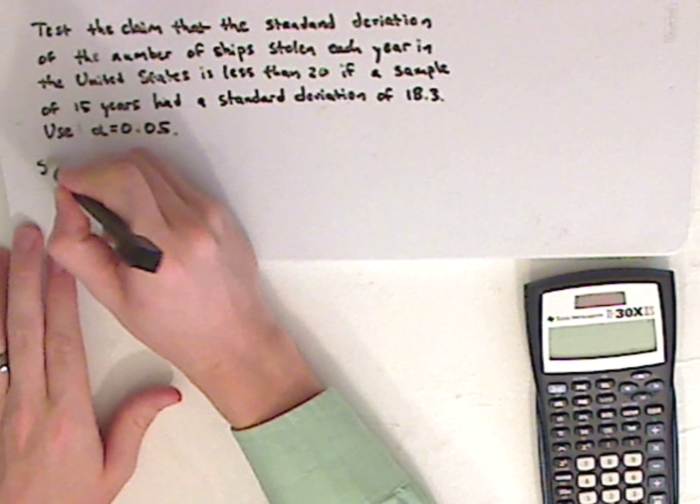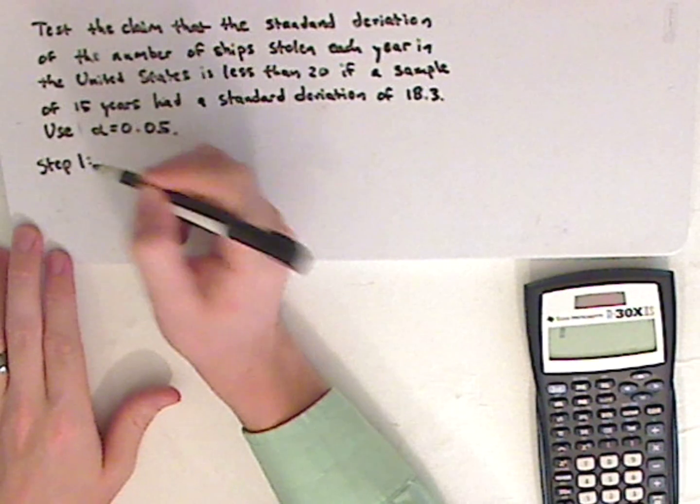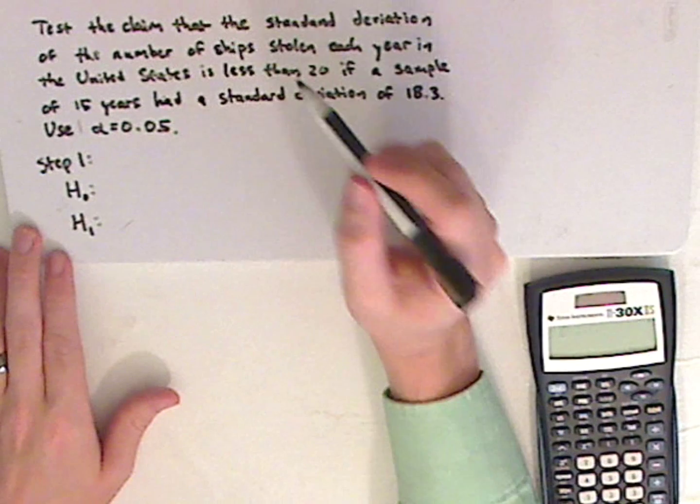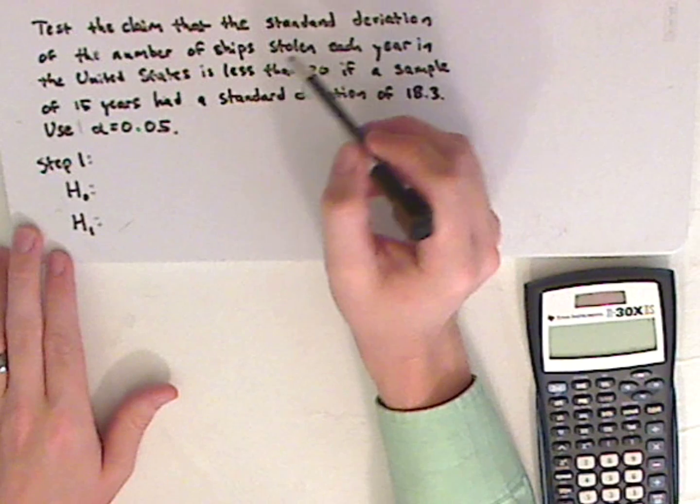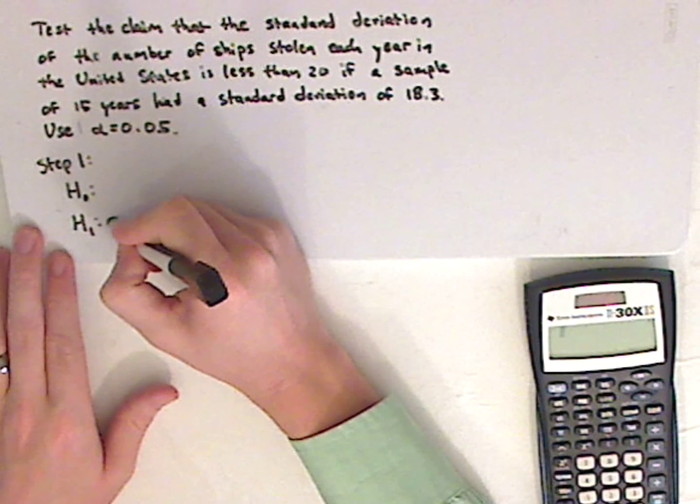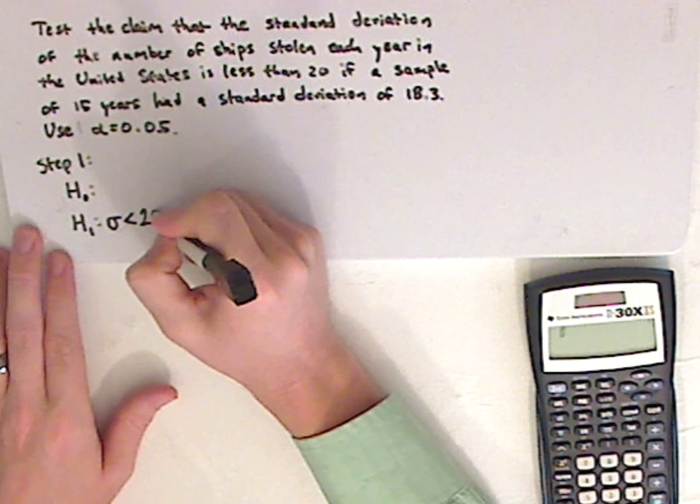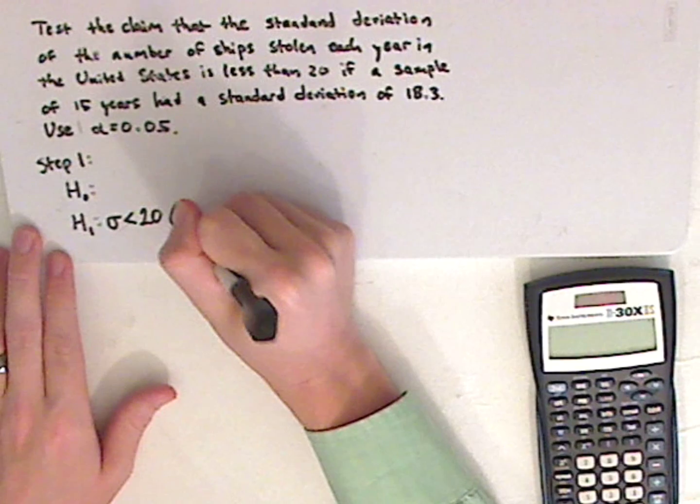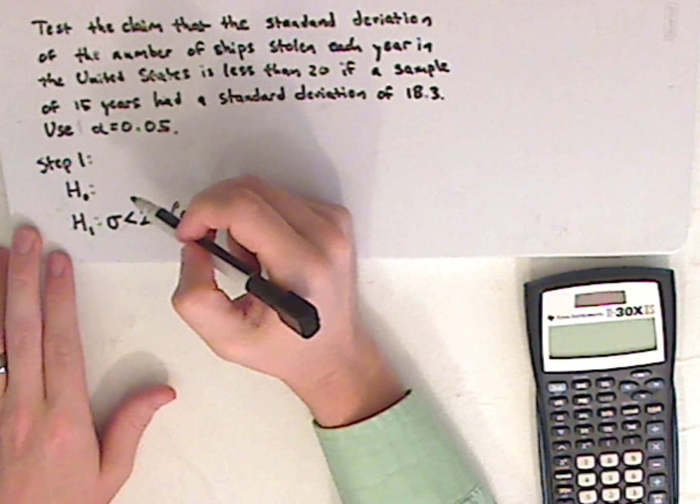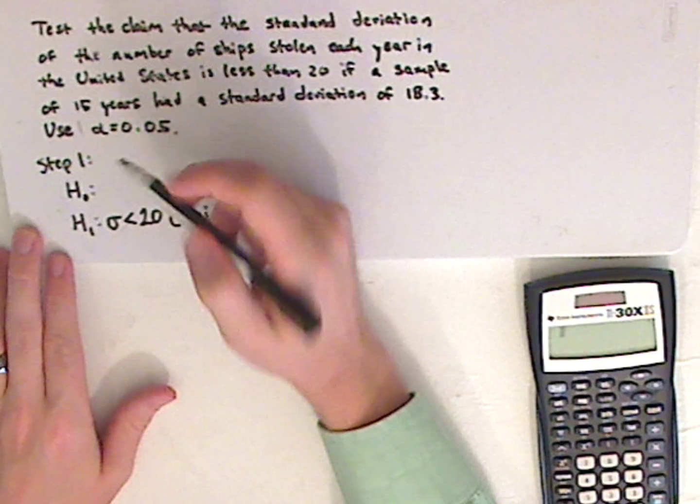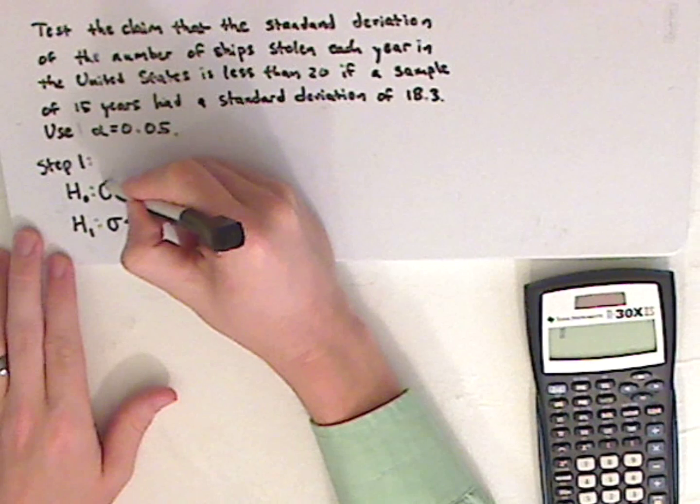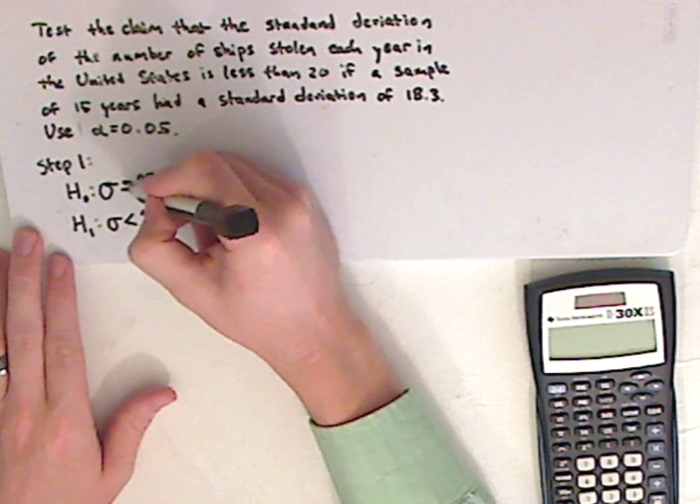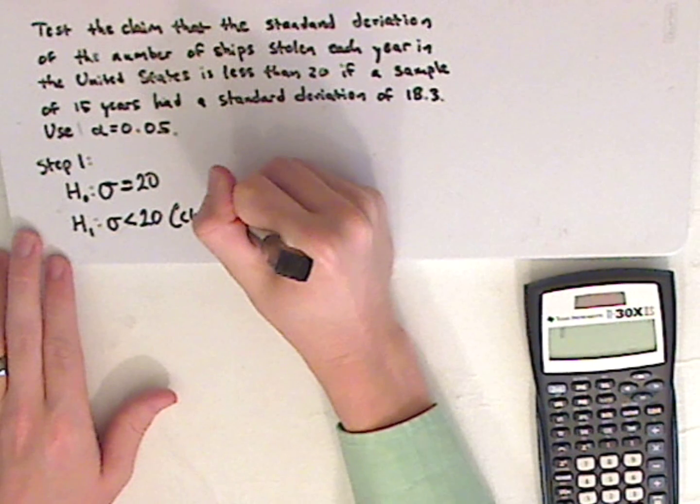Alright, step one is you want to do your alternative hypothesis and your null hypothesis. Now, first look at the claim. The claim is that the standard deviation is less than 20. Remember, for your alternative hypothesis, it's always going to include something that's not equal, where the null hypothesis always includes something that's equal. So here, you'd write your null hypothesis as sigma equals 20. Your null hypothesis always has equals in it some way.